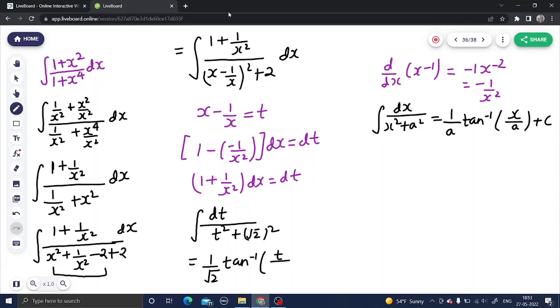t by √2. Let's see the final answer. If I want to write that will be 1/√2 tan⁻¹, what is my t? My t is x minus 1/x divided by √2 plus a constant c. You can make changes accordingly. If you want to simplify it more, you can write this as 1/√2 tan⁻¹, this will be x² minus 1 and x will come in denominator.